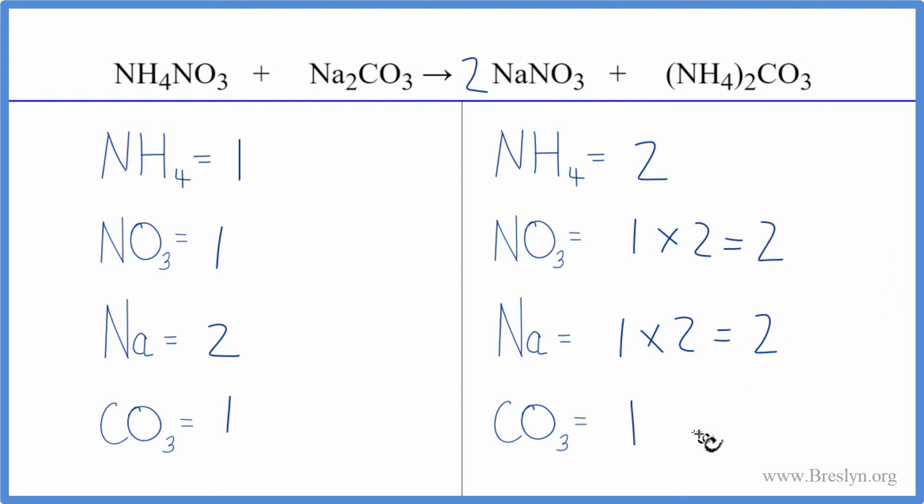What's next? Let's fix the ammonium. We have one here and two here, so we'll put a two in front of the ammonium nitrate. One ammonium times two gives us two of those, one nitrate times two gives us two of those, and we're done.